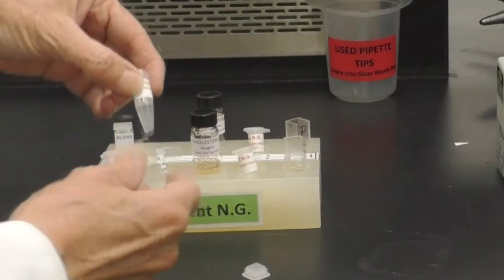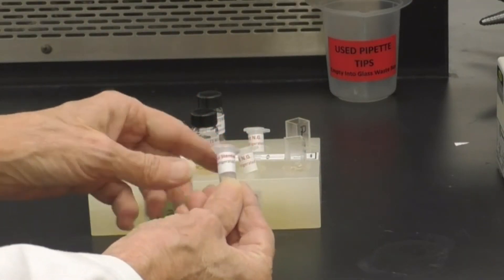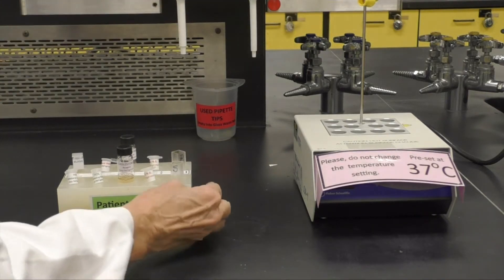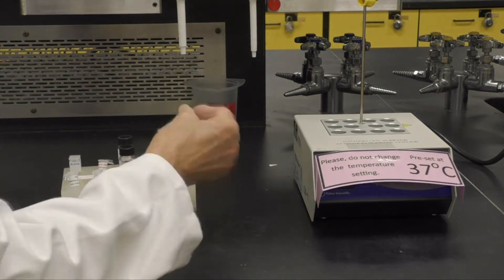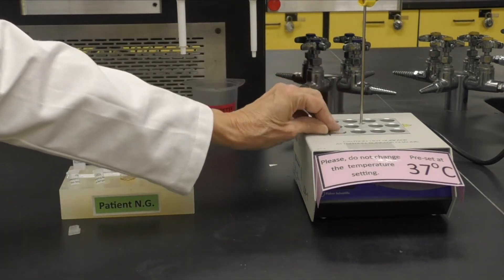Then add 20 microliters of the cholesterol standard. Make sure it is not the HDL standard into the cuvette labeled as the standard. Cap it, rock gently to mix, and place it in the dry bath incubator for 5 minutes.